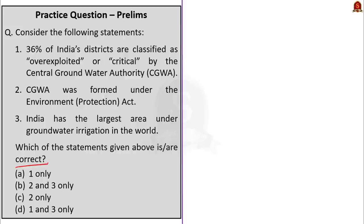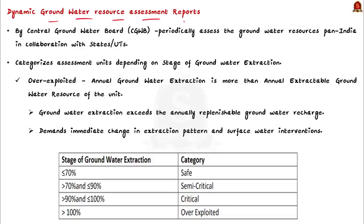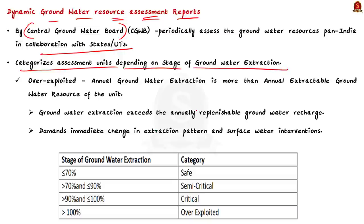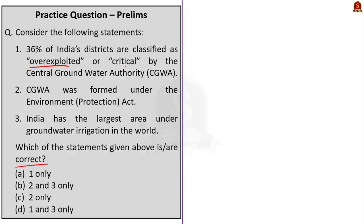To understand the first statement, we need to know a report called Dynamic Groundwater Resources Assessment. The central groundwater body periodically assesses groundwater resources in India, in collaboration with states and union territories, and publishes this report. In it, the central groundwater body categorizes assessment units — districts, taluks, or mandals — depending on stage of groundwater extraction.